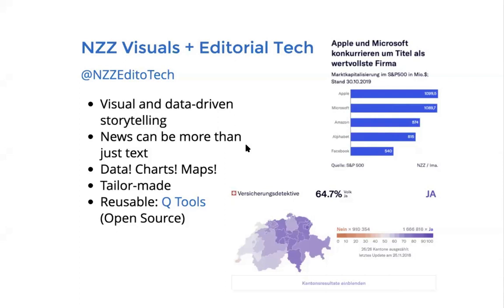I work in the editorial tech team. We are four people. We collaborate closely with the visuals team, which is another about 15 people, and together we do visual and data-driven storytelling — things like videos, data journalism, infographics, illustrations, etc. Basically everything that goes beyond just text.